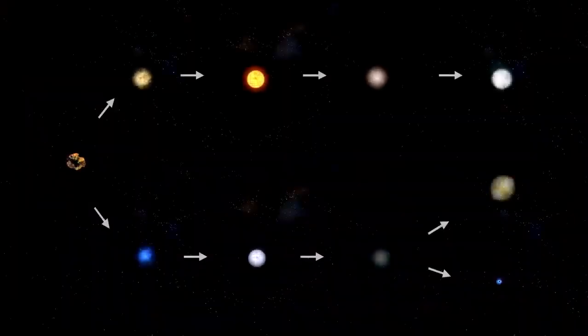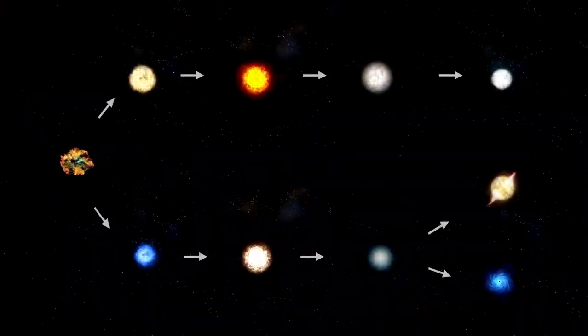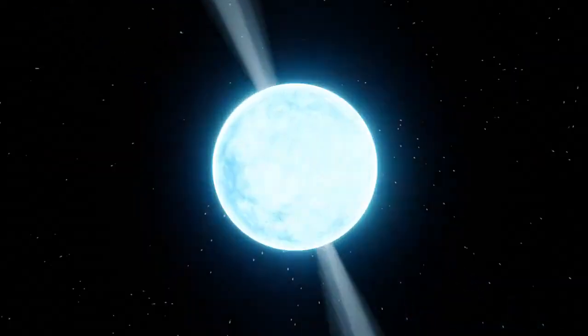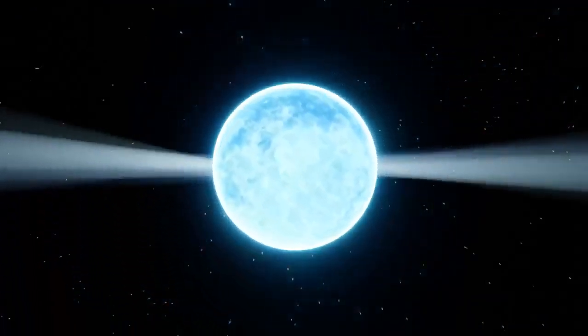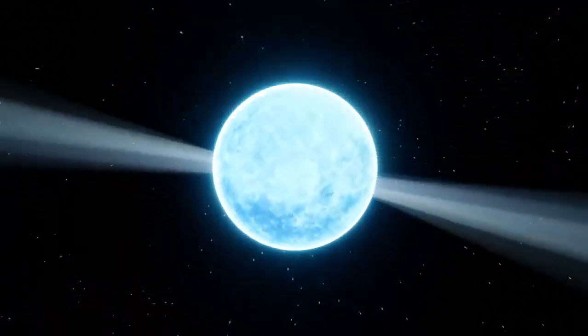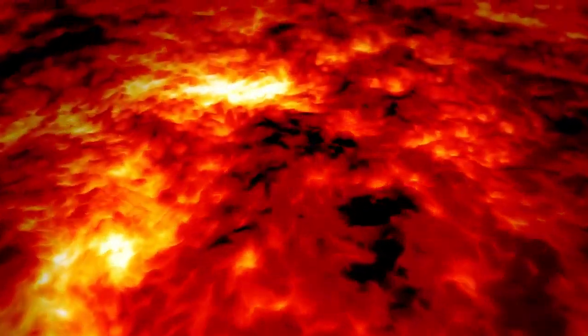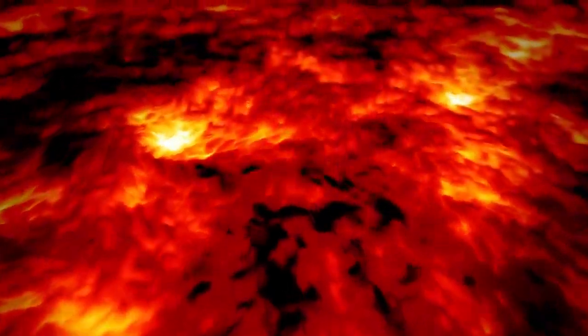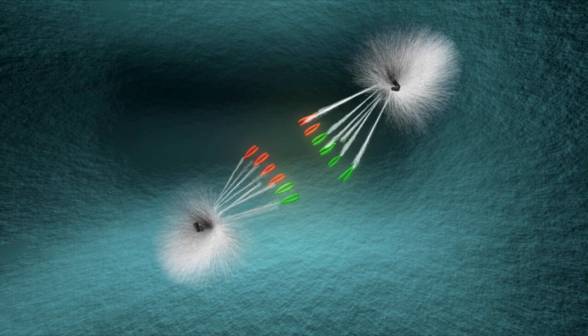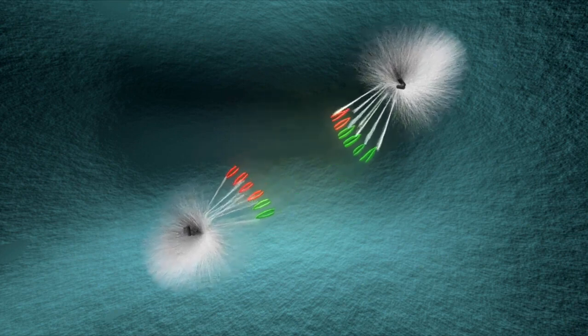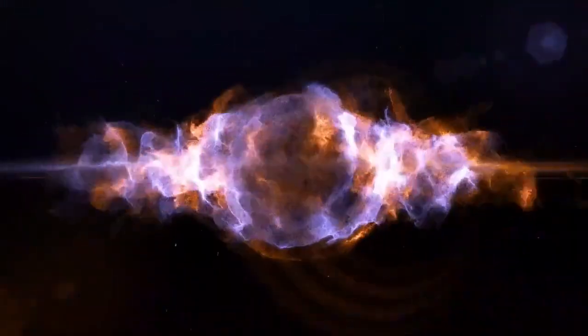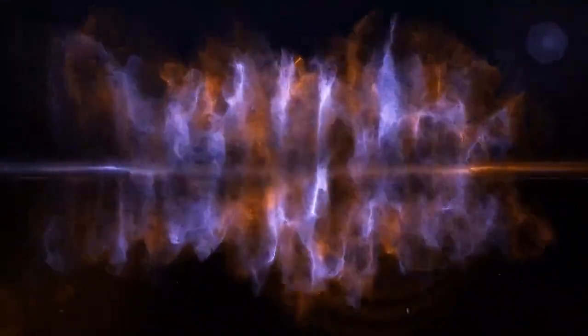One intriguing process within the star is stellar convection, where energy generated in the core rises toward the surface. This movement creates convection currents that transport energy outward, balancing the star's internal processes with its external luminosity. These currents also cause variations in brightness, manifesting as the pulsations observed from Earth. The interplay between gravity and radiation pressure is one of the most fascinating and critical factors influencing Betelgeuse's behavior, highlighting the delicate equilibrium at the heart of stellar dynamics.